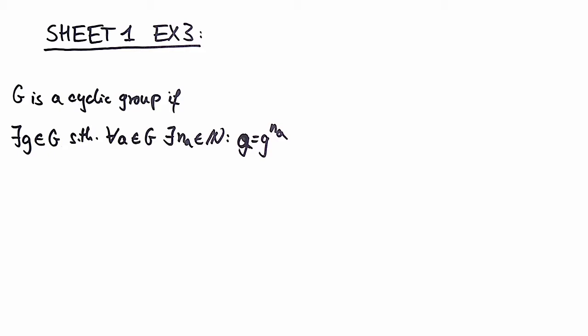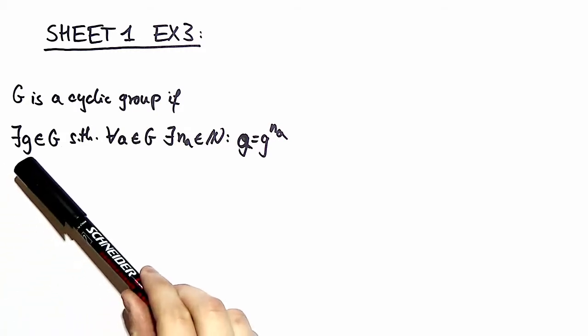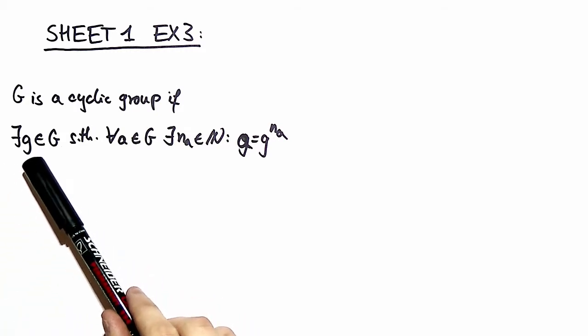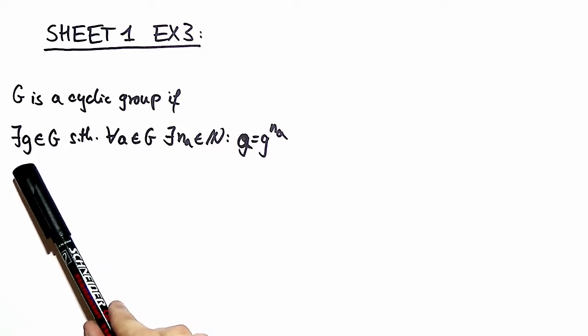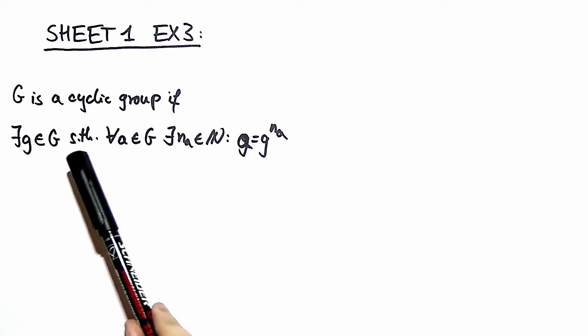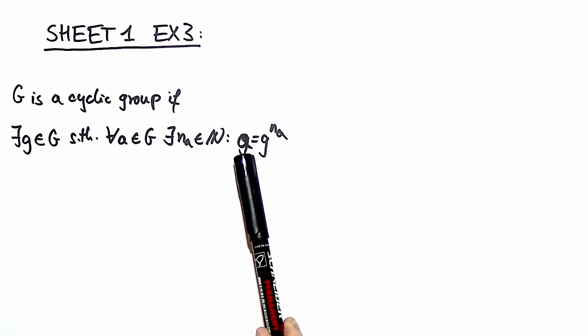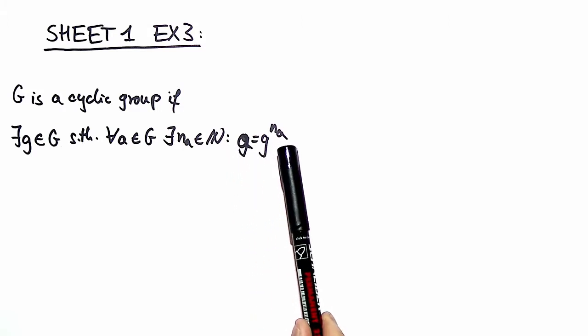The definition of a cyclic group can be read as follows. There is an existence required, namely the existence of an element G, what we call a generator, and with that element G we can generate any other element, we call it A, in the group by simply taking a specific power.